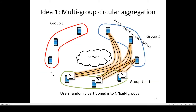The first component is multi-group circular aggregation, where N users are randomly partitioned into L groups, where L equals N over log N. Each group has log N users, and users in group L send their messages to the users in group L plus 1. Aggregation is executed sequentially over the L groups, and at the end of the protocol, the server can obtain the aggregate of all models of participating users. This structure enables the reduction of aggregation overhead from order of N-squared to order of N times log N.